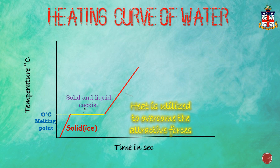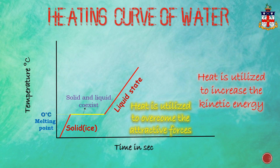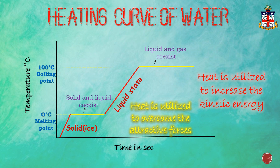Heating beyond this temperature converts ice into liquid water. The sudden increase in temperature refers to an increase in kinetic energy of the particles, and the water gets warmer and warmer until there is no further rise in temperature. This refers to 100 degrees centigrade — the boiling point of water. The liquid and gaseous states co-exist here, and the temperature stays at 100 degrees centigrade until all the water has turned into water vapors, shown by a sudden rise in temperature.